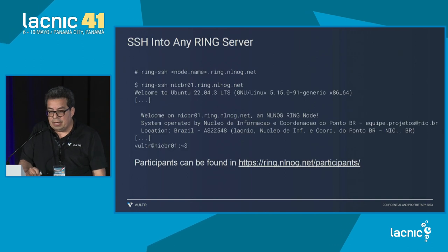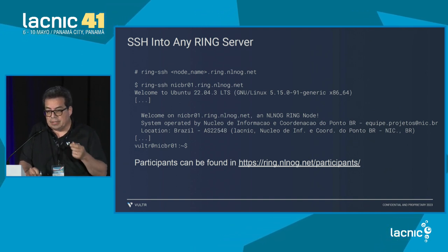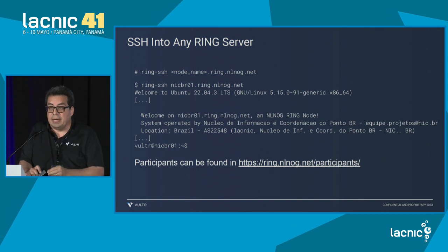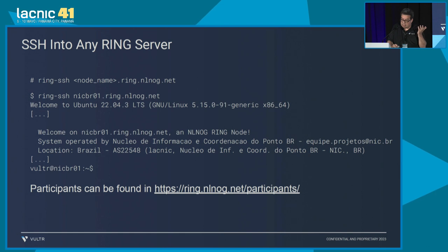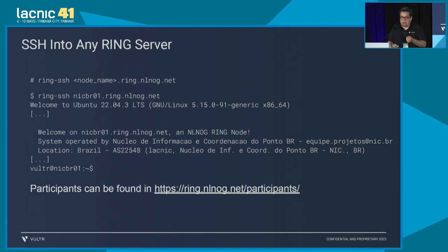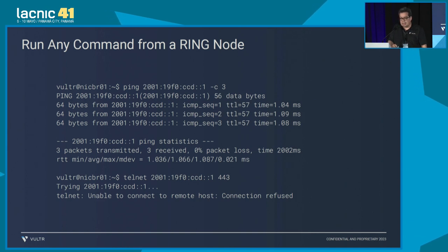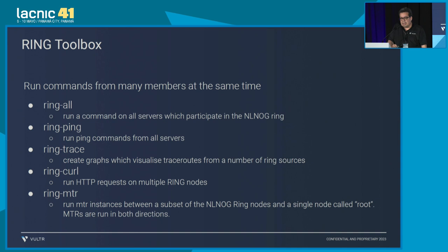Not only can you access these machines, but you can run commands. From my machine, I can access a machine from NIC.br that they have in Ring. From there, they give me a prompt, and from the prompt I can ping, SSH to other machines, run MTR, or whatever. The condition is: please, if we're going to give you this access, do not destroy the machines. A ping from NIC.br can be done easily. You can also do a telnet to the HTTPS port to check whether you can connect.